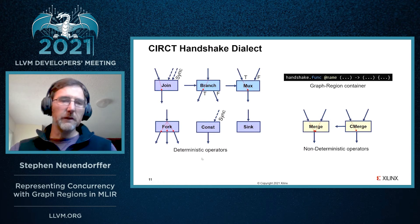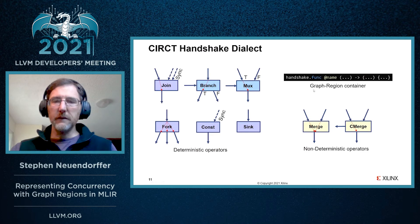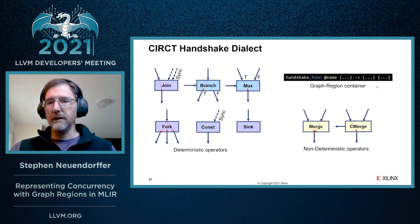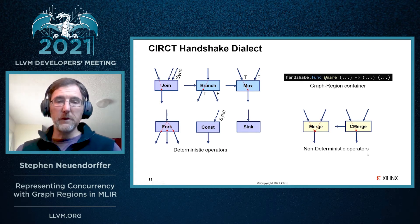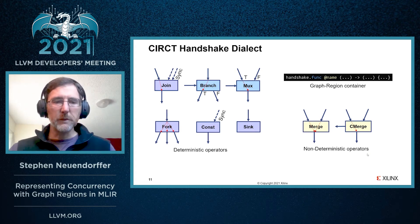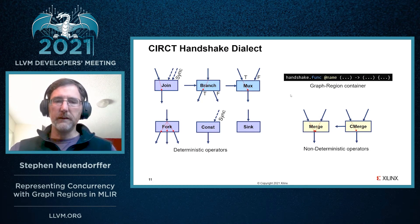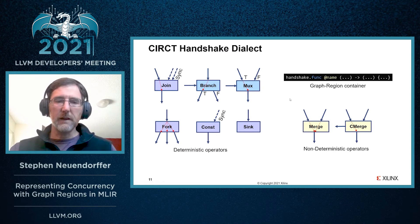There are a number of operators that can be used to represent deterministic circuits, and a handshake.func operation, which is a graph region container that allows us to combine our handshake operations. There are also some non-deterministic operators that, if you use them, you can get non-deterministic behavior, which is sometimes useful in hardware circuits. The handshake dialect is also designed to compose with other existing dialects like the arith dialect for representing fundamental math operations.